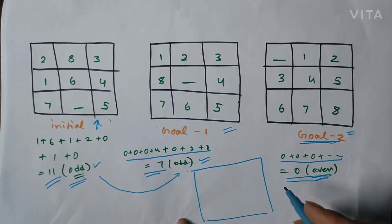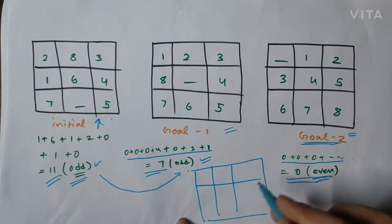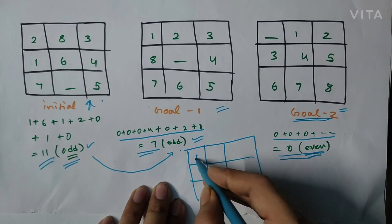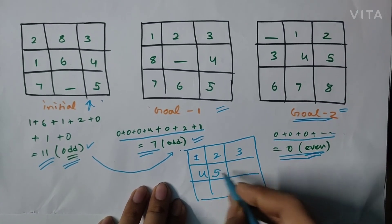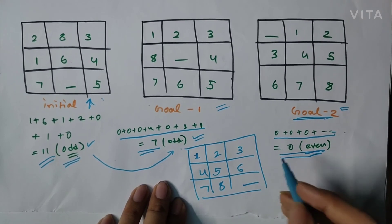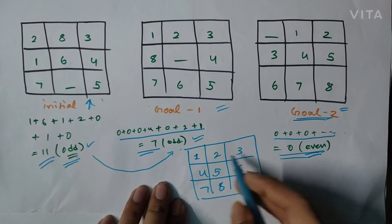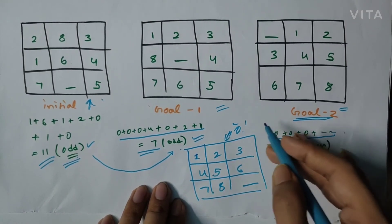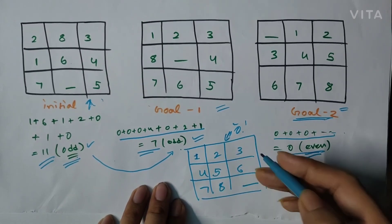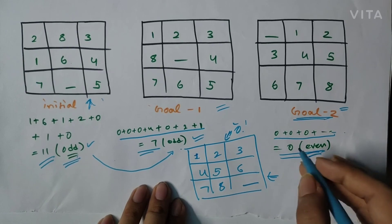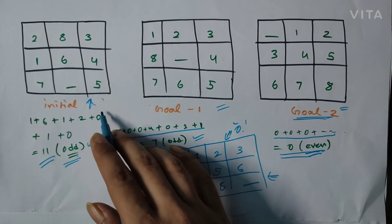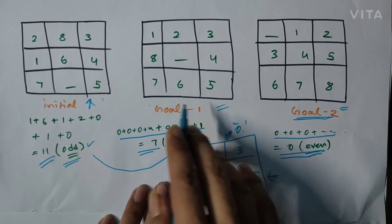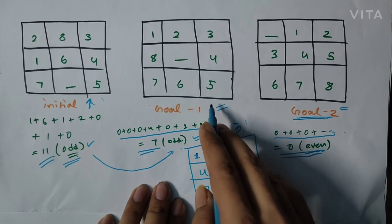For the standard goal state, we only check whether the initial state inversion count is even, because the standard goal state 1, 2, 3, 4, 5, 6, 7, 8 has no inversions at all — total inversion count is zero, which is even. That's why for the standard case: even initial inversion count means solvable, odd means not solvable. But for the generalized case, we need to check the parity of both the initial state and the goal state.